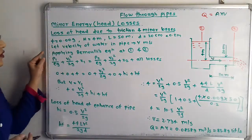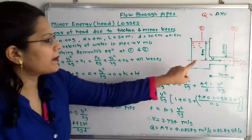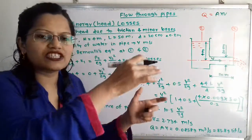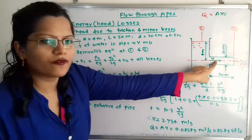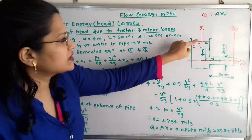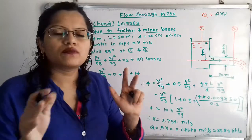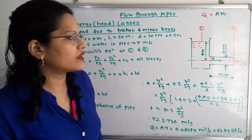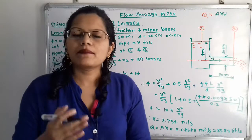Now we will move to the calculations. The velocity V is unknown, so we consider the velocity of water in the pipe as V m/s. The water in the tank is stationary, while the water in the pipe is in motion. We consider two sections: Section 1 at the free surface of water where water is stationary, and Section 2 at the outlet of the pipe.